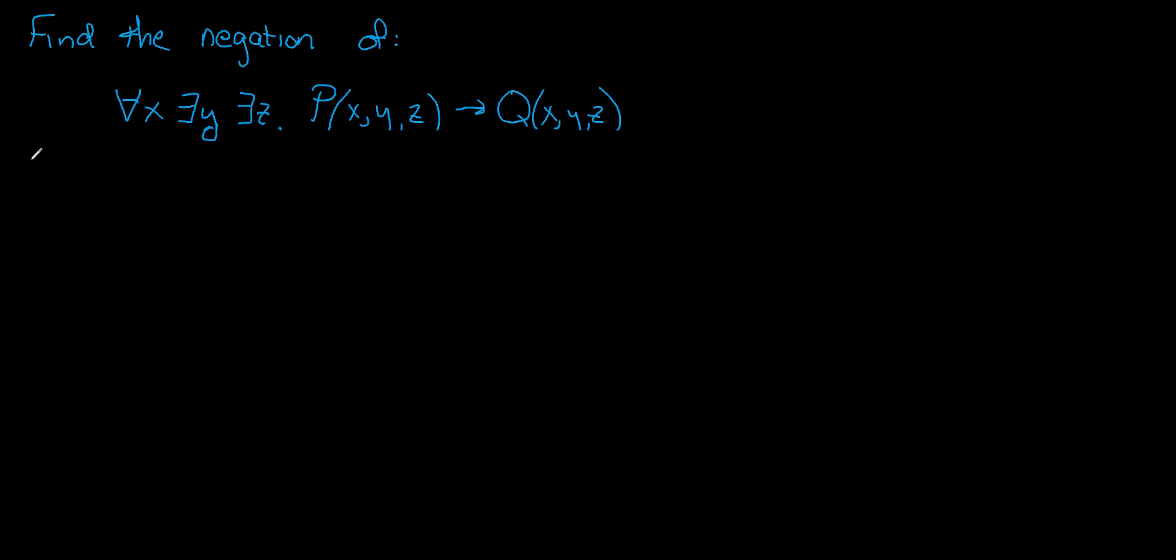So the first step is to negate. This is the negation but we don't want to leave our answer in this form and the reason is that we've got the negation sitting out in front and we've got all these quantifiers sitting inside the negation. So this is like a kind of a cheap answer. We can do better than this. We can pull that negation through. Let's do that now.